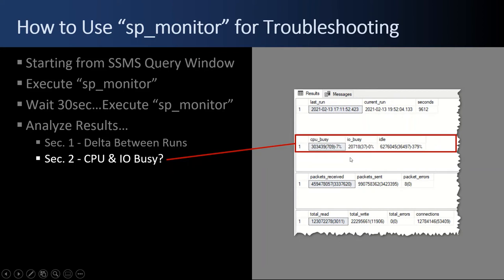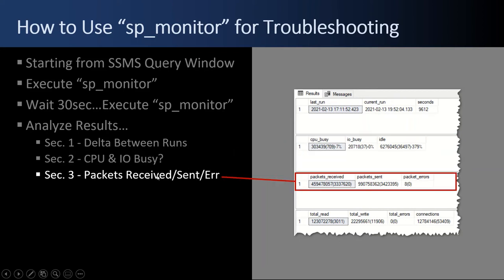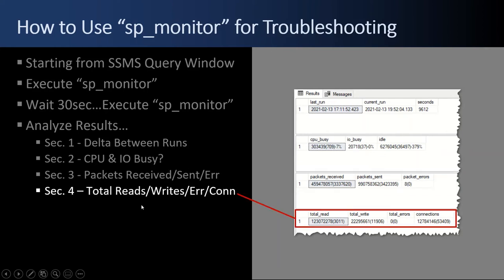The third section shows packets received or sent, and the fourth section shows total read rates. There is also an error count. If you're having hard disk issues or something's going bad, I'd expect this to always be zero. If it's not zero, it might be an indicator something's going bad — a network card or hard drive.